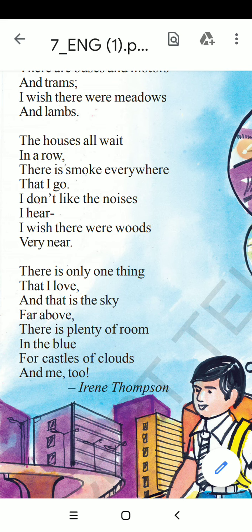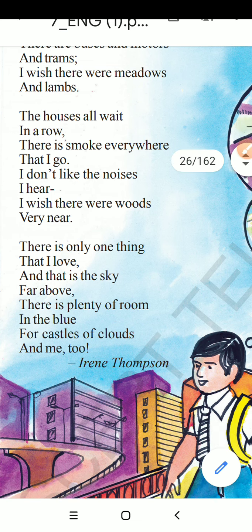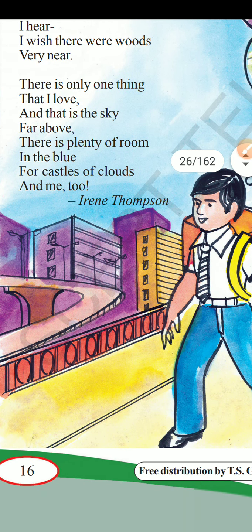So in the second stanza, he is saying that the streets in the town have houses arranged in a row, there is a lot of smoke wherever he goes, he does not like the noises of the vehicles he hears, and at the same time he wishes there should be woods — a forest — near to him.